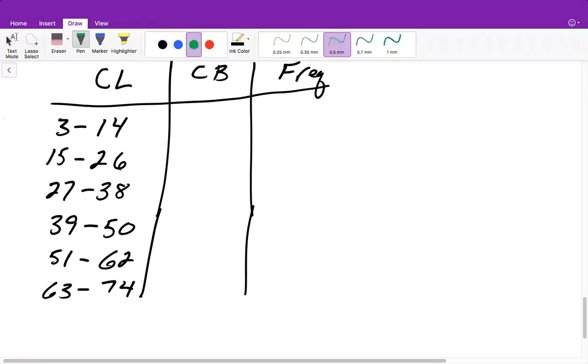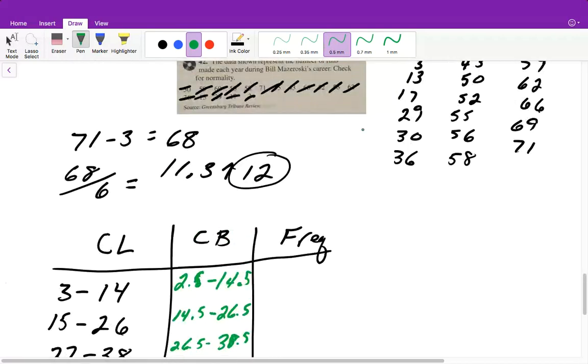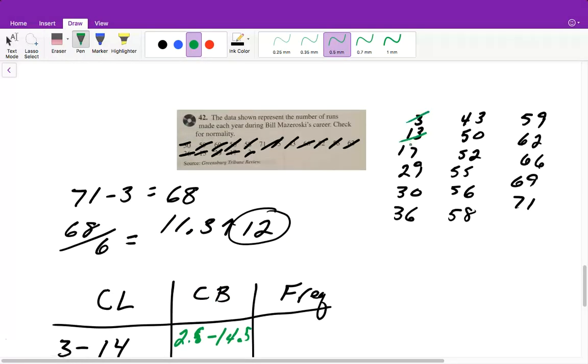All right, the class boundaries. Remember, the first number you subtract 0.5 from, so 2.5. And then the next number you add 0.5, so it's 14.5. And our upper class boundary will always be our lower class boundary. I'm going to fill the rest of this in. And this is what we're going to use when we actually graph this. Then we will look at our frequency. So between 3 and 14, we have 2.